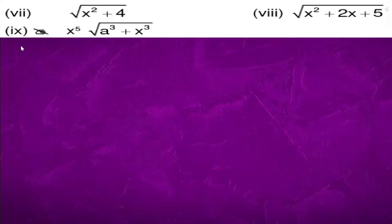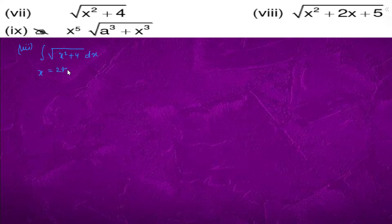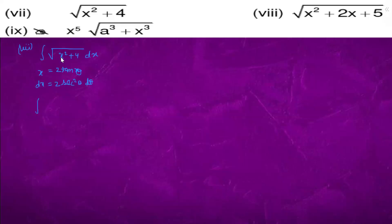In question 7, we have integration of √(x² + 4) dx. We will put x = 2tanθ, so dx = 2sec²θ dθ. Replacing x with 2tanθ gives 4tan²θ + 4, which equals 4sec²θ, and the square root becomes 2secθ.